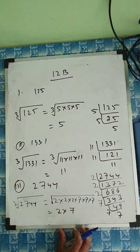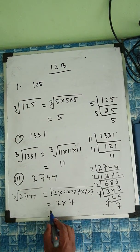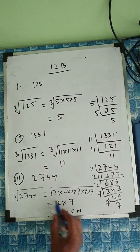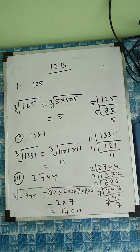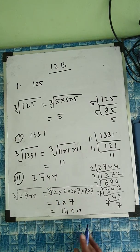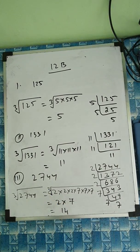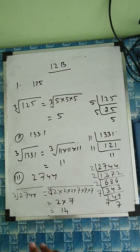The cube root of 2744 equals 2 × 7, so the answer is 14. The cube root of 2744 is 14. That's the end of the first set of questions.